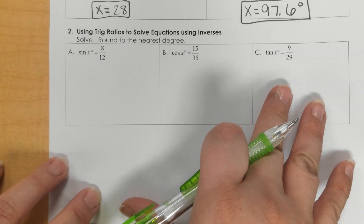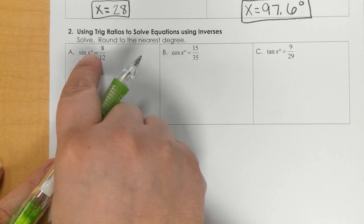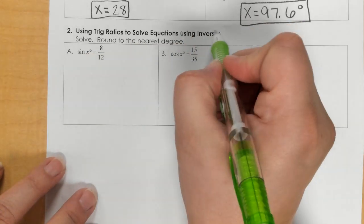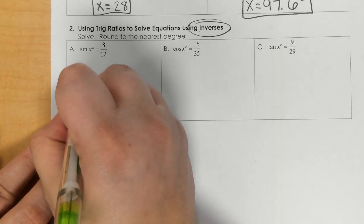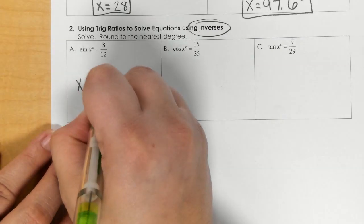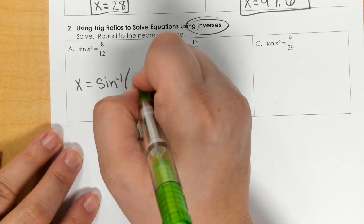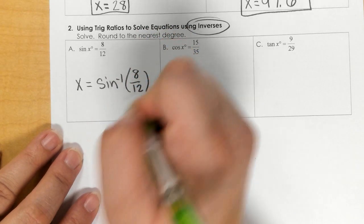Okay, for these, because x is the degree, the angle measurement, you're doing the inverse. Okay, there's that word that's important. So, it's saying x is going to equal the inverse, so sine inverse, and then our fraction, 8 twelfths.